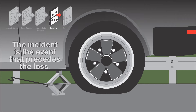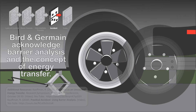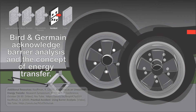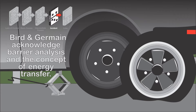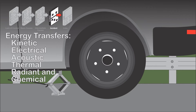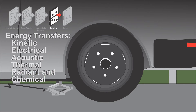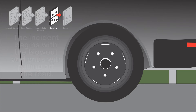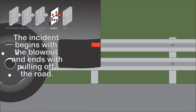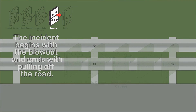The incident is the event that precedes the loss. Byrd and Germain acknowledge the concept of energy transfer associated with barrier analysis. If the amount of energy transfer is too much, it causes personal harm or property damage. Consistent with Haddon, they note that the energy transfer includes kinetic, electrical, acoustic, thermal, radiant, and chemical energy. In the van example, the incident includes the blowout of the tire and pulling off to the side of the road.